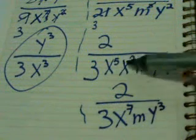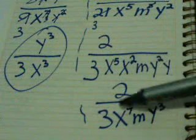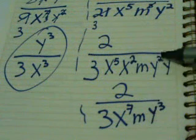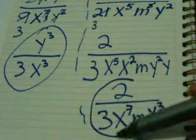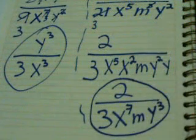Remember, when we multiply, we add exponents. x^5 times x^2 is x^7, and y^2 times y is y^3. And this is the answer of this division of monomials.